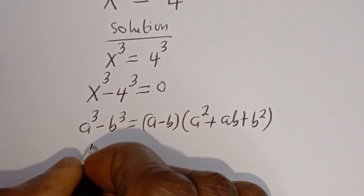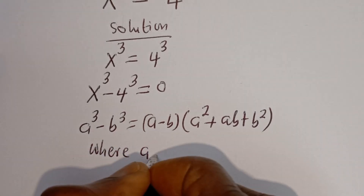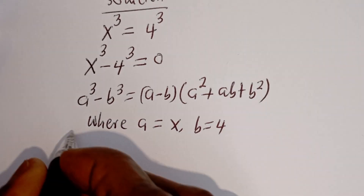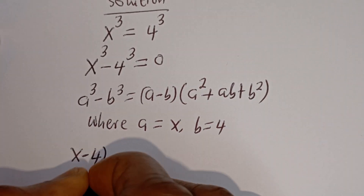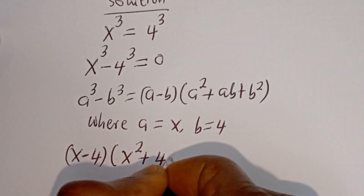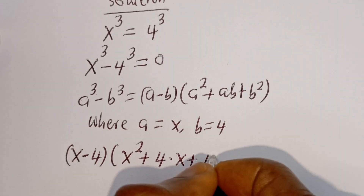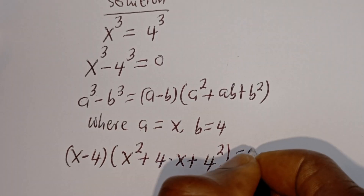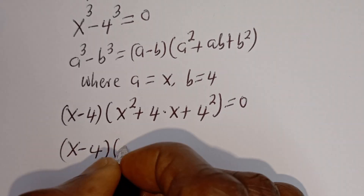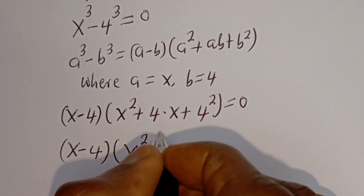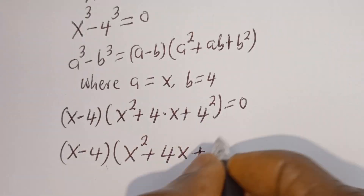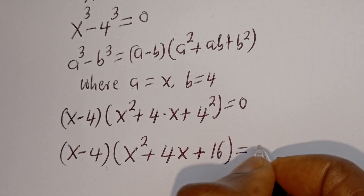Here, where a is equal to s and b is equal to 4. Now we have s minus 4, bracket, s squared plus 4 multiplied by s plus 4 squared is equal to 0. Then s minus 4, bracket, s squared plus 4s plus 16 is equal to 0.